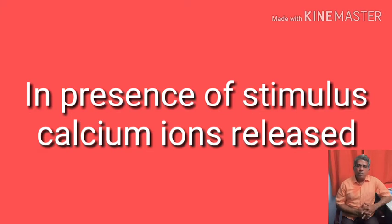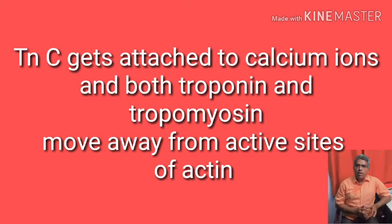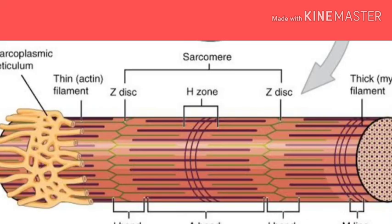Troponin is divided into three types: TnT, which is attached to tropomyosin; TnI, which inhibits actin from interacting with myosin heads; and TnC, which binds to calcium ions. In the absence of calcium ions, tropomyosin remains stabilized over the active sites of actin. But when calcium ions are released under a stimulus, they bind to TnC. In the presence of calcium ions, both troponin and tropomyosin are dragged away from the active sites of actin filaments, making the active sites ready to bind with myosin.